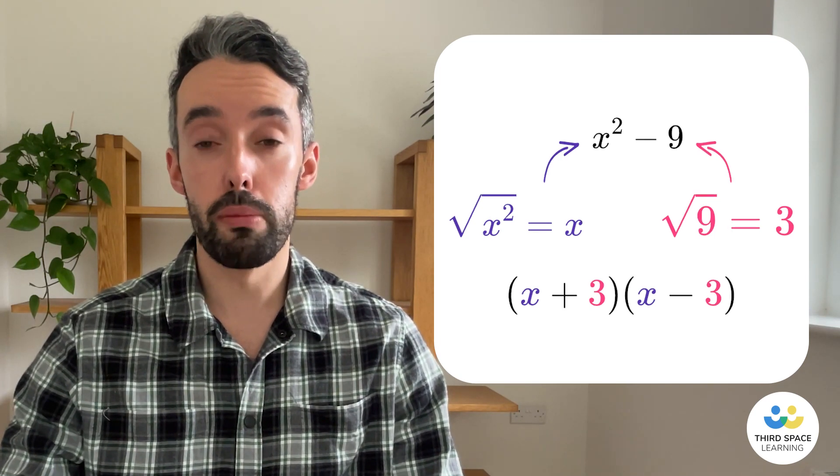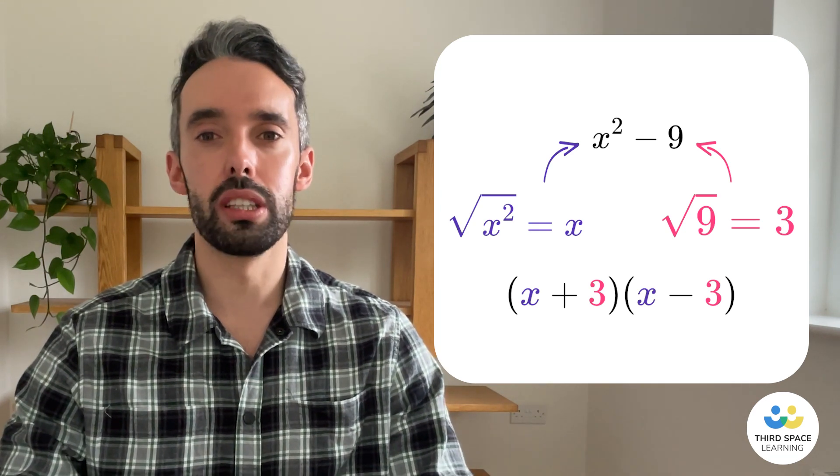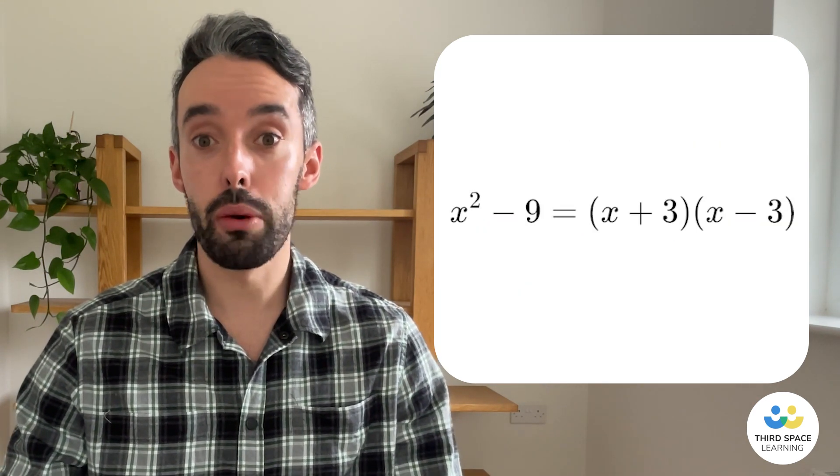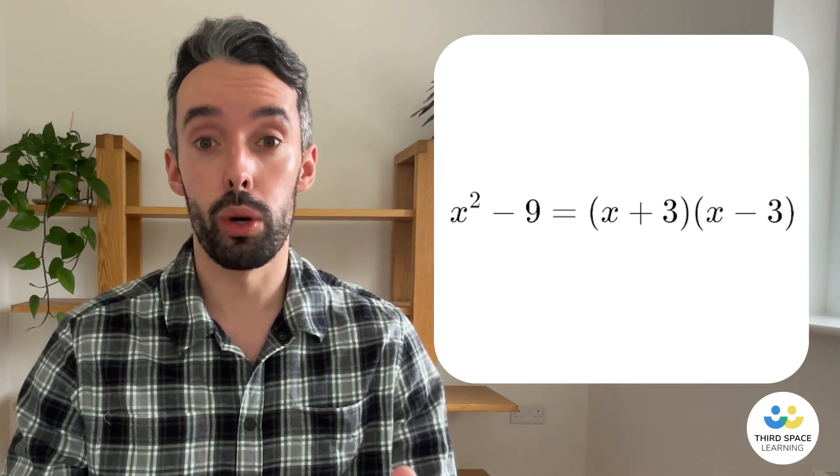And then we put a plus in one bracket and a minus in the other one, and the order doesn't matter at all. And there we go, we have factorized our quadratic expression.